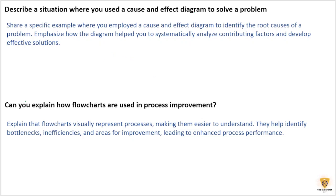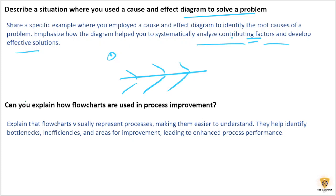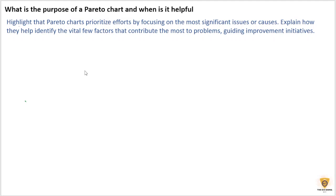One interview question: describe a situation where you used a cause and effect diagram to solve a problem. You should share a specific example of how you employed the diagram to identify the root cause, emphasizing how it helped systematically analyze contributing factors. Another question: how are flowcharts used in process improvement? Flowcharts help identify bottlenecks, inefficiencies, and areas of improvement, leading to enhanced process performance.